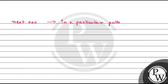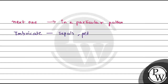The third type is imbricate aestivation. In imbricate aestivation, the sepals and petals overlap each other, but there is no particular direction of overlapping — they overlap without any specific pattern or direction.